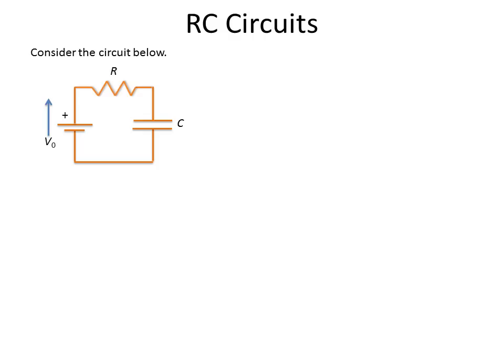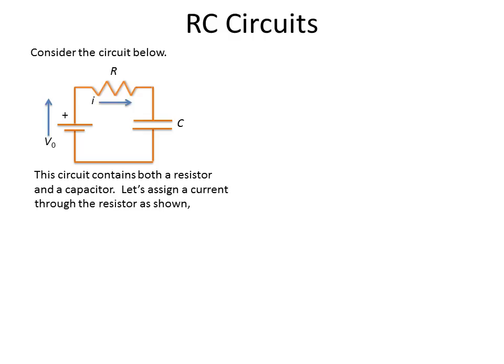So if we look at this circuit that we have, we can see that we have a voltage source, a resistor, and a capacitor. We want to ask what's going to happen to this circuit. Let's assign the current to flow in this direction, and let's start working out through stuff that we know how to figure out, such as Kirchhoff's loop rule.